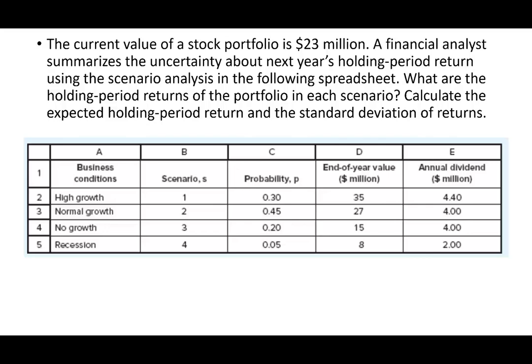So this is the problem that we are going to be working with. The current value of the stock portfolio is 23 million. A financial analyst summarizes the uncertainty about the next year holding period return using scenario analysis in the following spreadsheet. We have four scenarios: high growth, normal growth, no growth, and a recession. What are the holding period returns of the portfolio in each scenario?